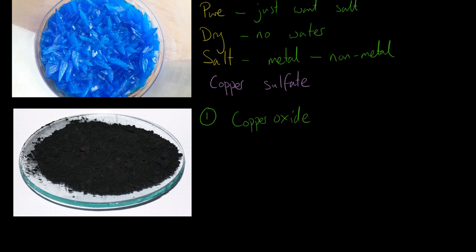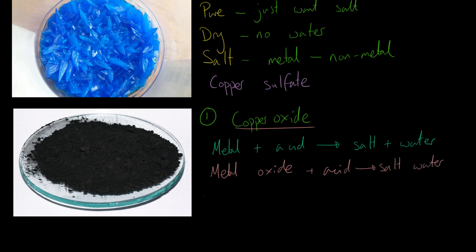Then what I can do is react that with an acid to make a salt. There are various chemical reactions you can do if you want to make a salt. You can do a metal plus an acid - that will give you a salt and water. Remember that's MASH. You could have a metal oxide like copper oxide plus an acid, which will give you a salt and water.